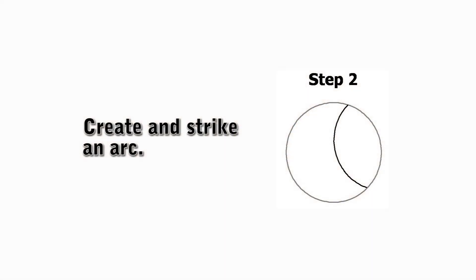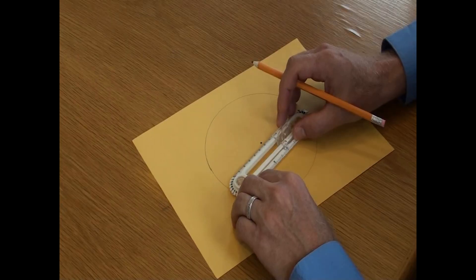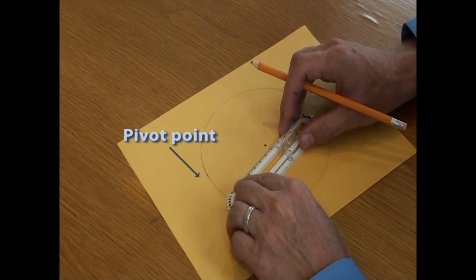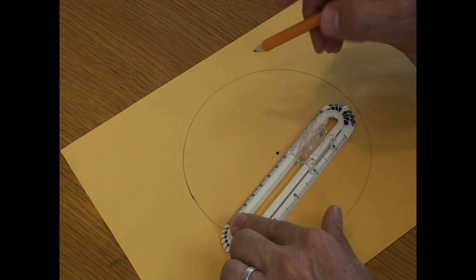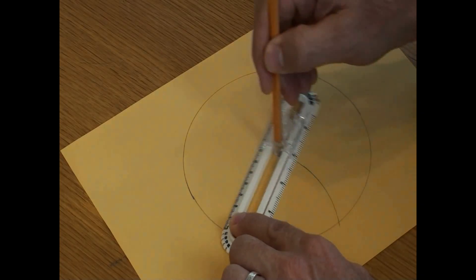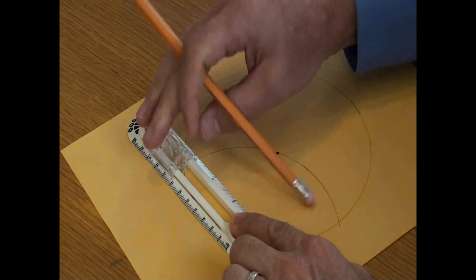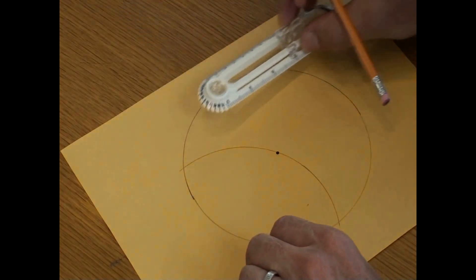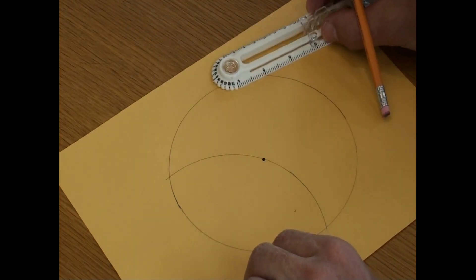The second step is to create and strike an arc using the circle and the pivot point. Place the pivot point on the circle and strike an arc that starts on the circle and ends on another point of the circle. I've created my first interior arc with the same radius of the circle.